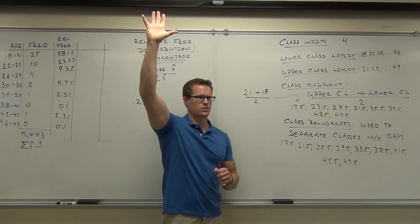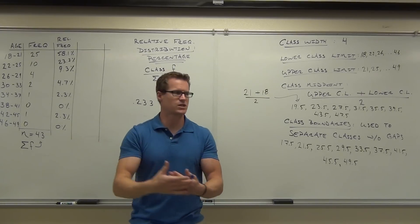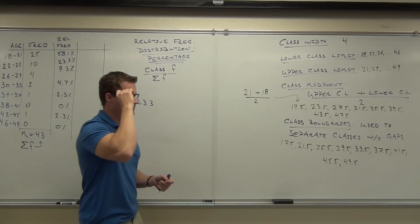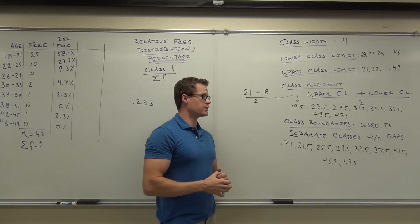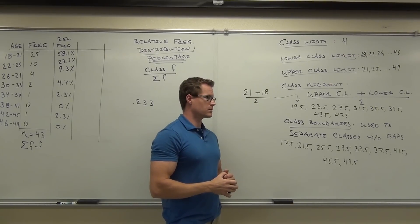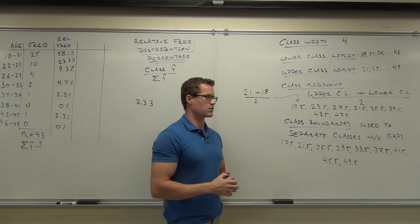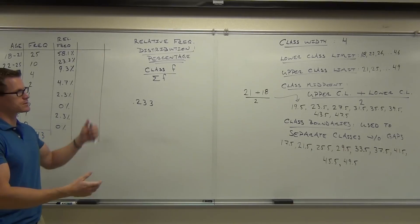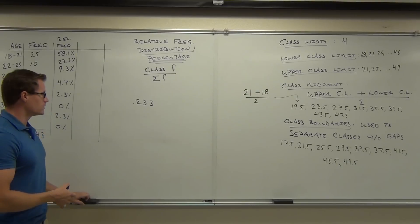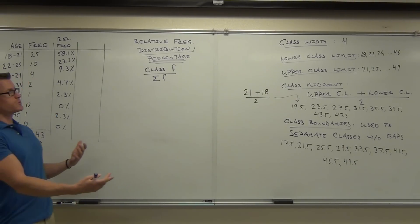How many people are with me so far on relative frequency? Good. So 'relative' means as compared to the whole — it's a percentage. How far off could rounding make it? Probably not over a percent. If it were like 103%, something is wrong — either that or you have a lot of classes. Okay, so let's move on from relative frequency distributions.